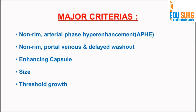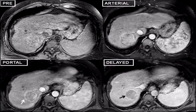Lesions with an enhancing capsule respond better to medical or surgical treatment and carry a positive prognostic outcome. Regarding size, lesions greater than two centimeters have a propensity to be diagnosed as HCC, although lesions between 10 to 19 mm showing certain characteristics can also be diagnosed as HCC. Threshold growth is defined as 50% or more growth over six months, or 100% or more growth over more than six months, or appearance of a new nodule in cirrhotic parenchyma of at least 10 mm within 24 months.